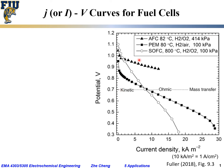The black solid square represents the PEM — proton exchange membrane fuel cell, also called polymer electrolyte membrane fuel cell — operated at 80°C with hydrogen as fuel and ambient air as oxidant at around 100 kPa, approximately one atmosphere.